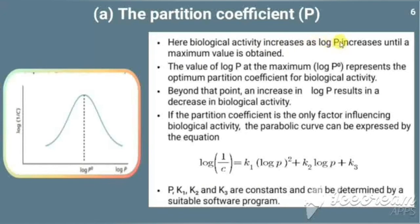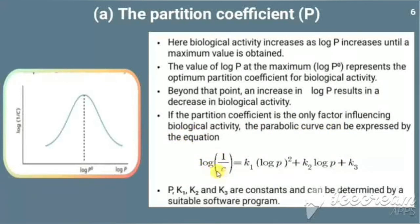In the parabolic curve, biological activity increases as log P increases until a maximum value is obtained, called the optimum partition coefficient, represented as log P₀. Beyond that point, increasing log P causes biological activity to decrease. If partition coefficient is the only factor affecting biological activity, the parabolic curve is expressed by the equation: log(1/C) = K₁(log P)² + K₂ log P + K₃, where K₁, K₂, K₃ are constants determined by suitable software.